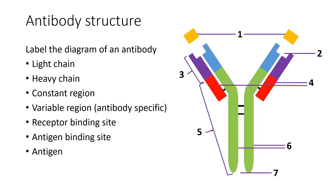Moving on to antibodies: antibodies have a particular structure. Each section is numbered on the right-hand side of the image, with the name of each section on the left. Pause the video and try to identify the names for each of the numbers one through to seven.